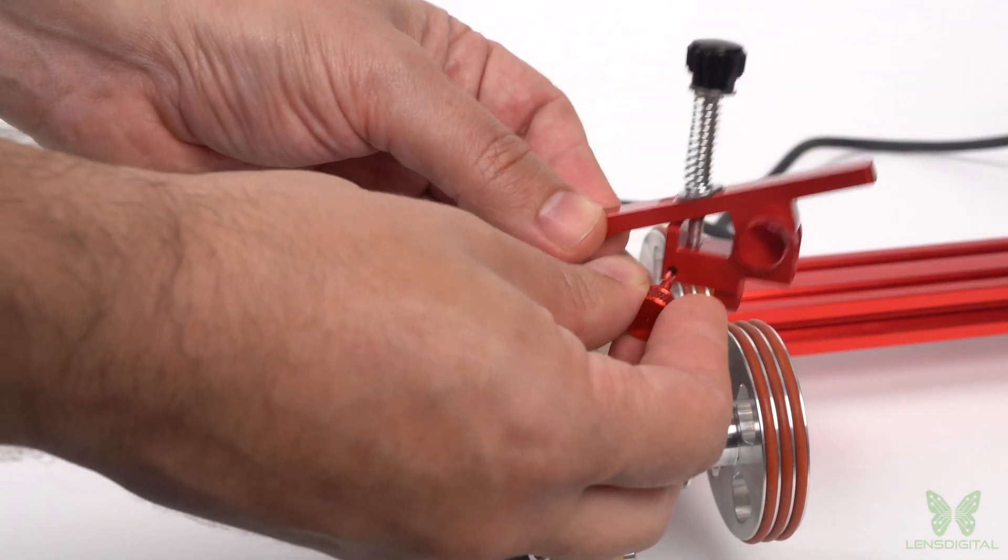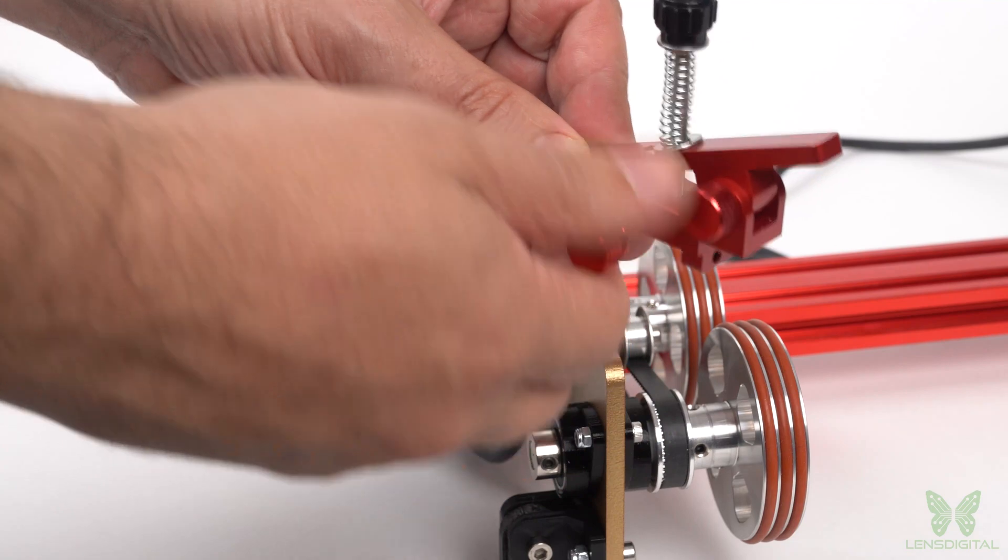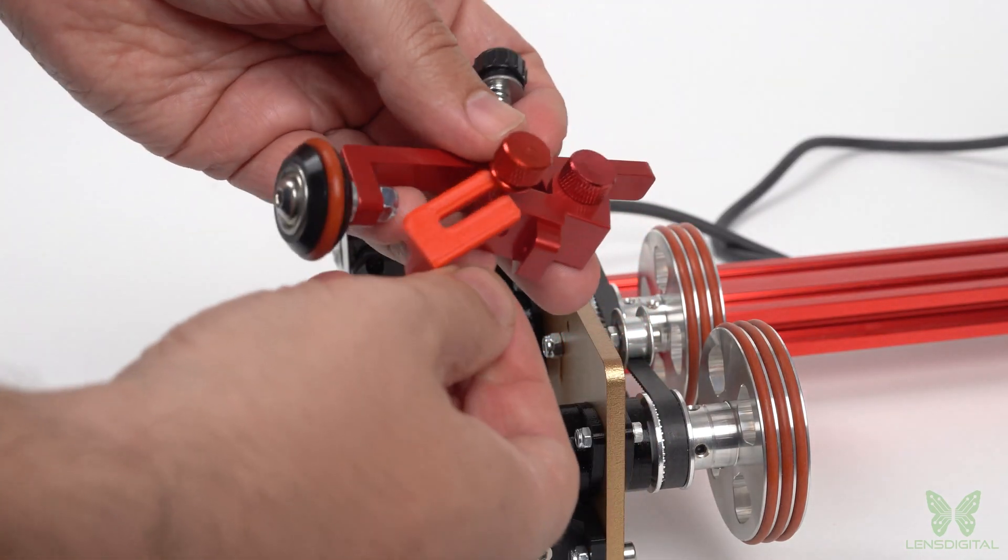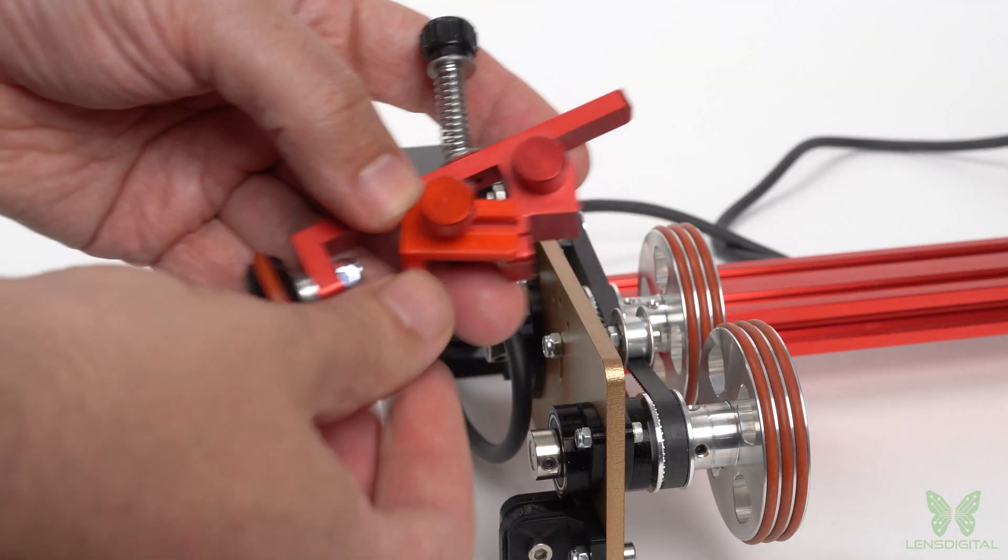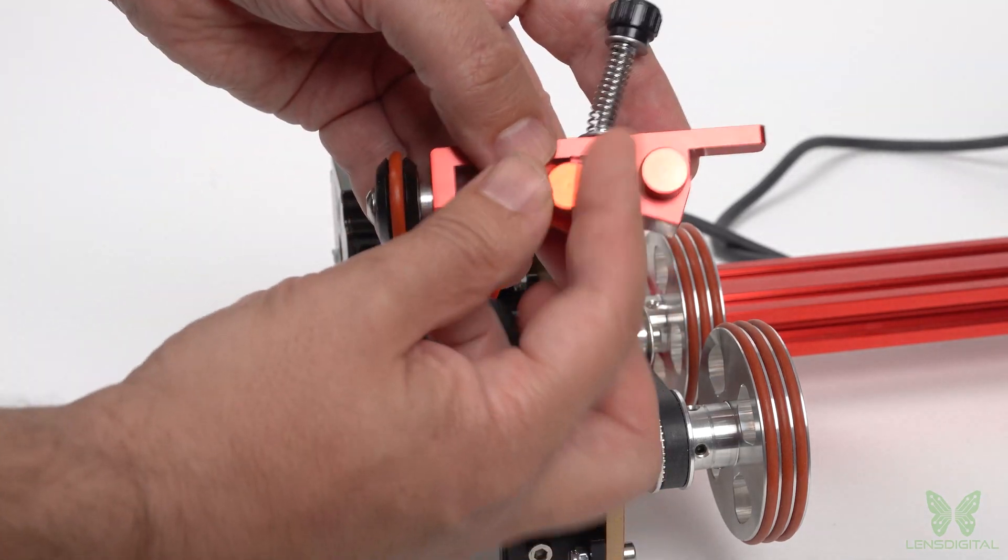Attaching the clamp to the PiBurn is super simple. You don't need any tools to do it. First, attach the front end stopper with one of the M3 thumb screws to the clamp base like so.